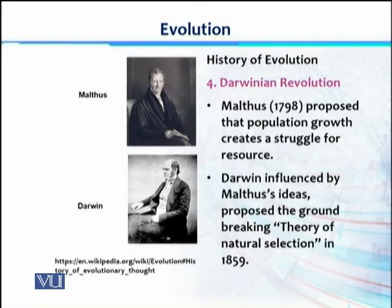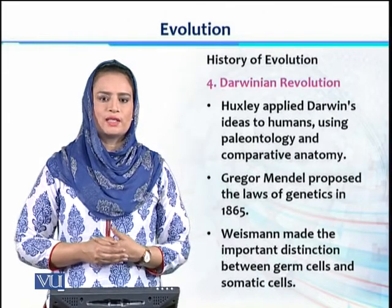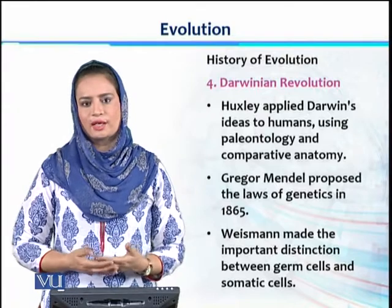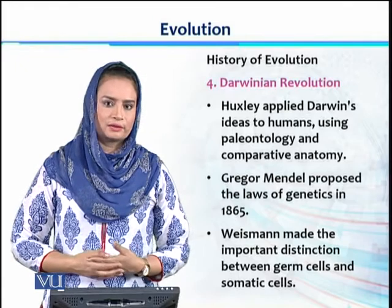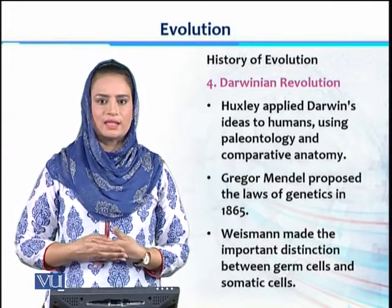The Darwinian period or Darwinian Revolution was the most remarkable time period in the history of evolution. Malthus, in 1798, proposed that population growth creates a struggle for resources — as population increases, members compete for available resources. This motivated Darwin to propose his groundbreaking theory of natural selection in 1859. Darwin's theory was further refined by followers such as Huxley, who applied Darwin's concepts to humans and used paleontology and comparative anatomy as evidence.